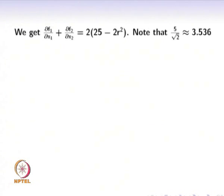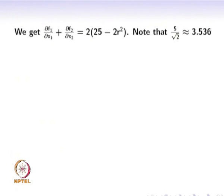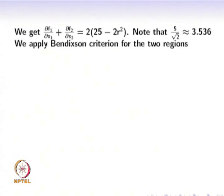Now let us consider the expression ∂f1/∂x1 + ∂f2/∂x2. This results in 2(25 – 2R²). The root of this equation is R = φ/√2, which is approximately equal to 3.536. So at R = 3.536, the value of this expression is 0.